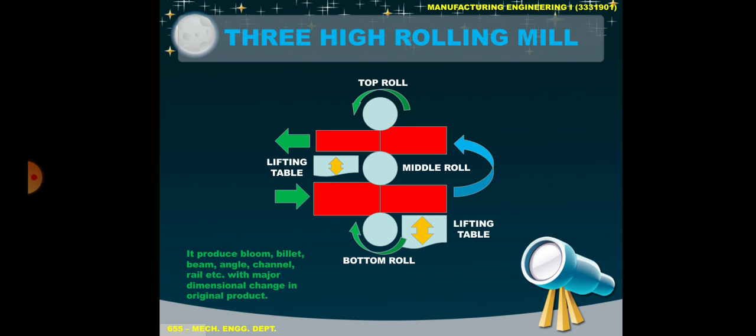It produces bloom, billet, beam, angle, channel, rail, etc., with major dimensional change in the original product. In a 2-high rolling mill there will be a minor change in the original product, while in a 3-high rolling mill there will be a major change to make an angle, channel, or rail.